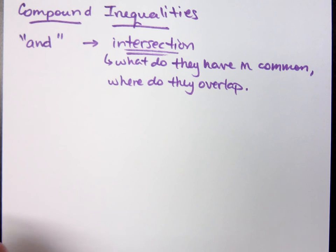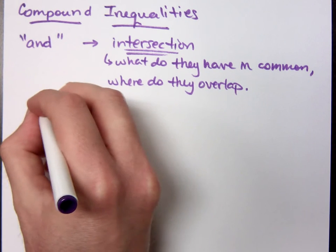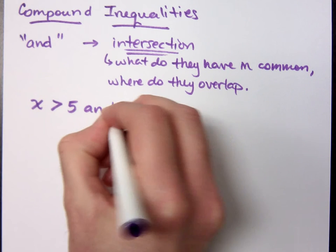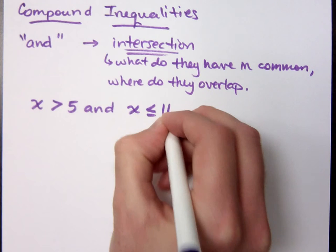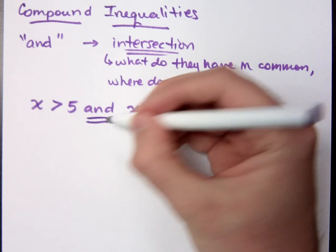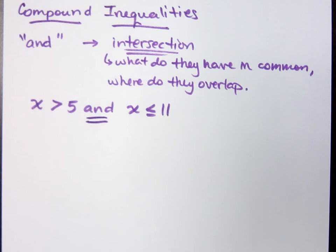An example of this could be something like x is greater than 5 and x is less than or equal to 11. We have two inequalities here. I've got this word 'and' right here in the middle.